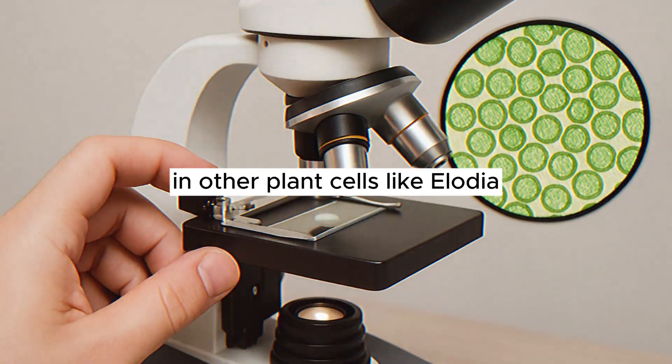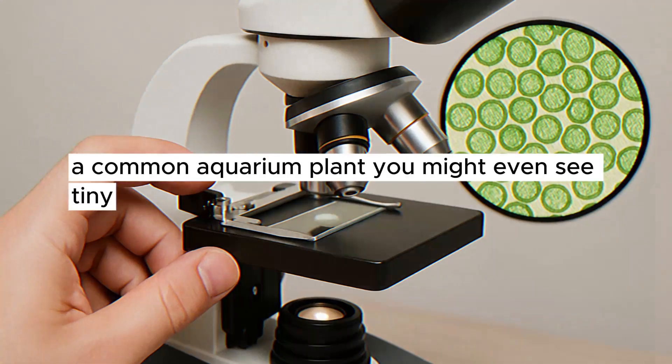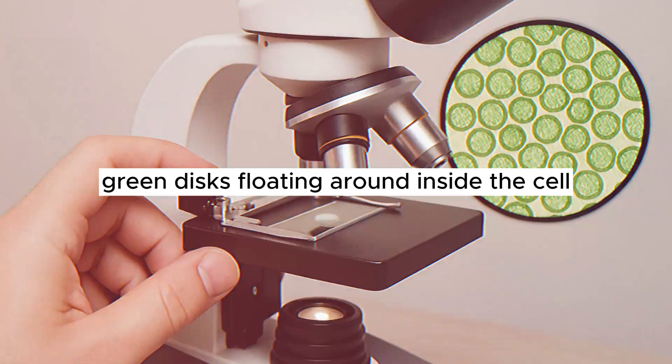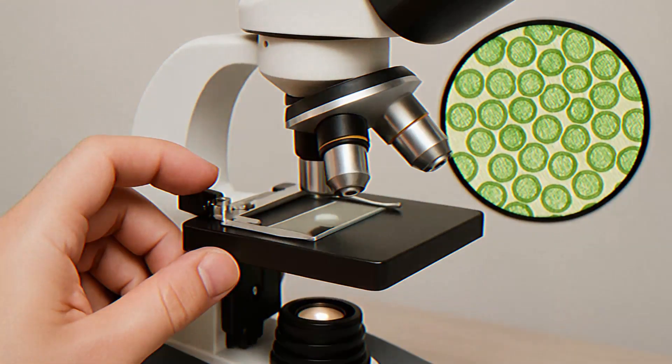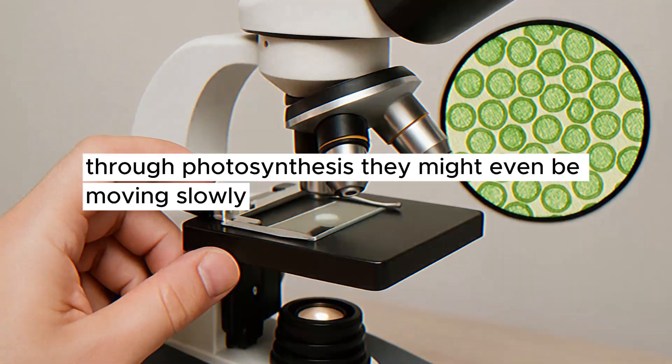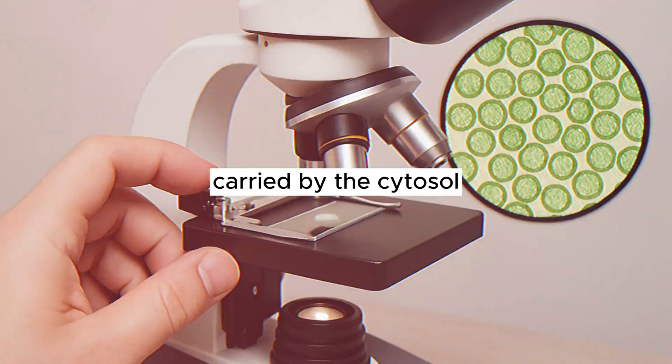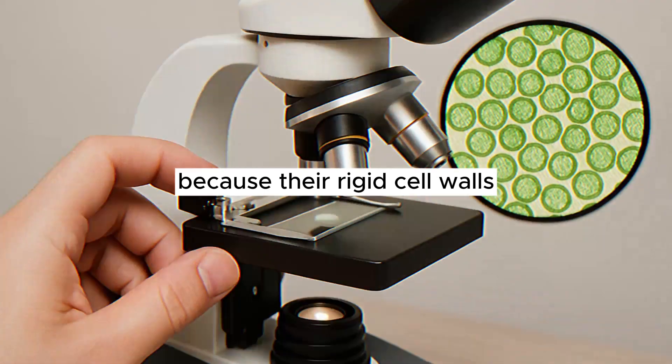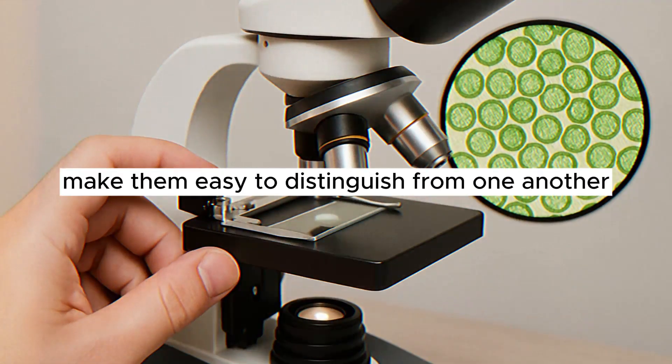Sometimes, in other plant cells like elodea, a common aquarium plant, you might even see tiny green disks floating around inside the cell. Those are chloroplasts, the amazing structures that capture sunlight to make food for the plant through photosynthesis. They might even be moving slowly, carried by the cytoplasm. Seeing plant cells is usually straightforward because their rigid cell walls make them easy to distinguish from one another.